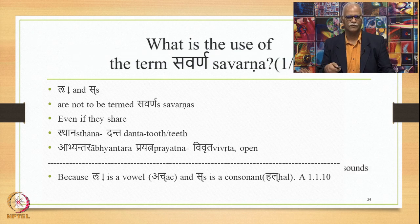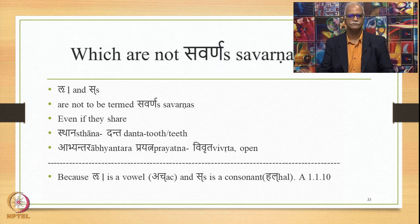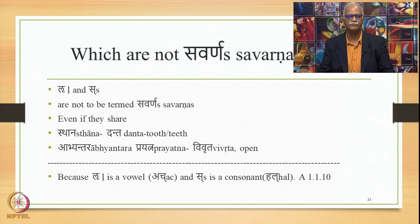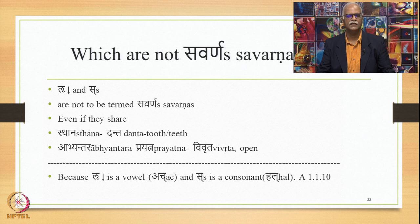To summarize: any sound which has similar place of articulation and similar effort of articulation — namely the Abhyantara, internal one — can be called the Savarna of another sound by default. For the system of Panini, however, consonants and vowels cannot be termed Savarna. Therefore, by making an explicit rule, Panini prohibits the term Savarna for a consonant and a vowel — this is a systemic need of Paninian grammar.